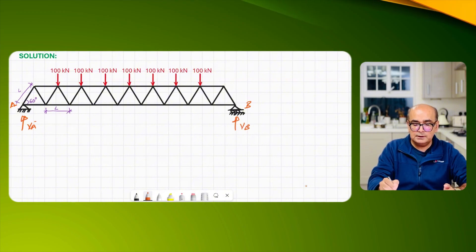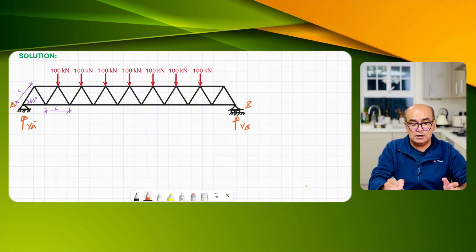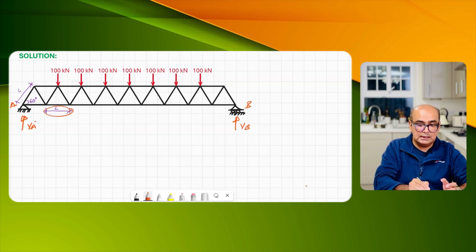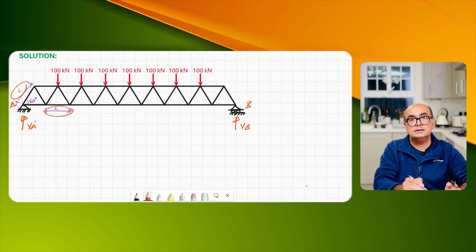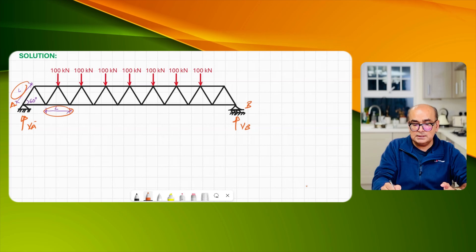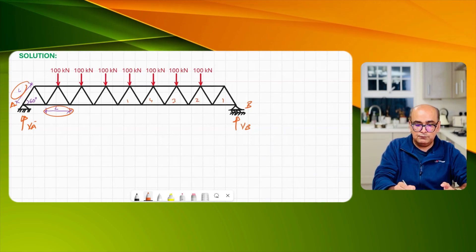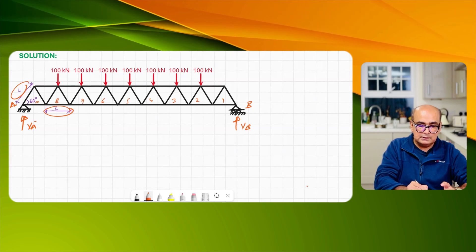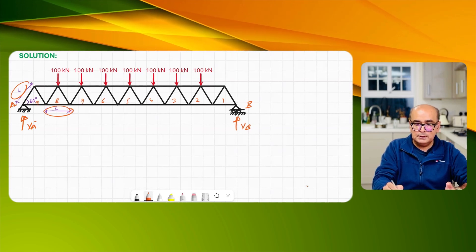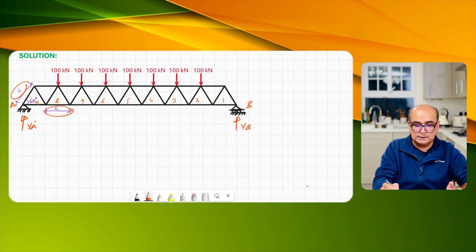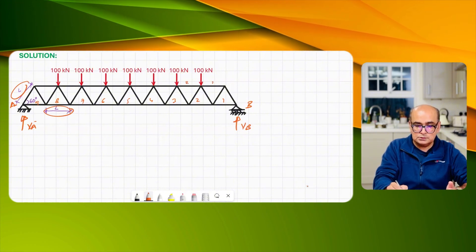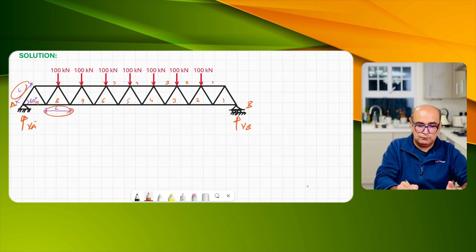Now you don't need lots of calculations to find out the reactions. You can see there are seven points. These are all equilateral triangles which means that length is L here and length is L here. They are inclined at 60 degrees and at the bottom we have one, two, three, four, five, six, seven, eight, and nine panels.